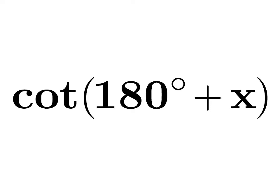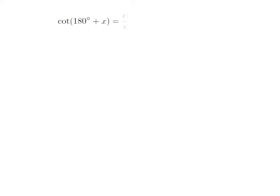In this video, we will learn to find the value of cot(180° + x). As we know, cot θ is equal to cosine of θ divided by sine of θ. So, cot(180° + x) is equal to cosine of (180° + x) divided by sine of (180° + x).